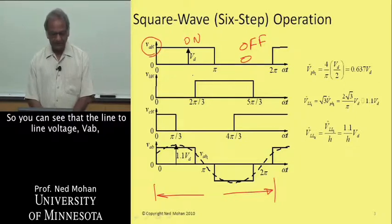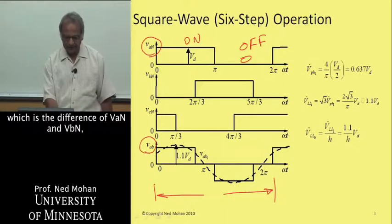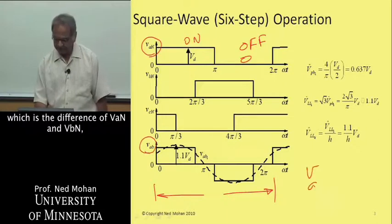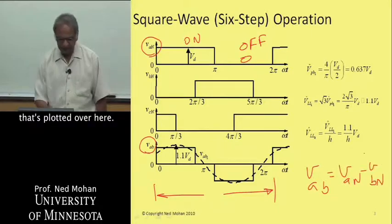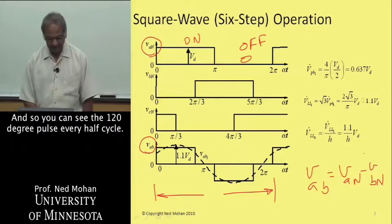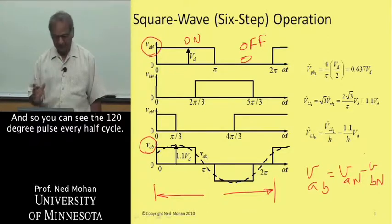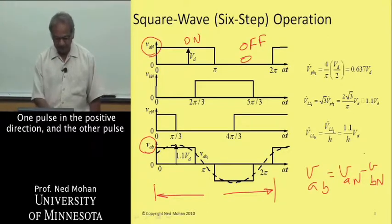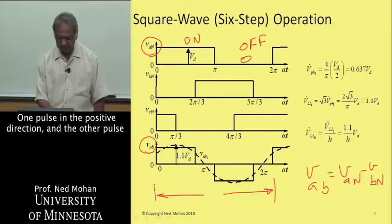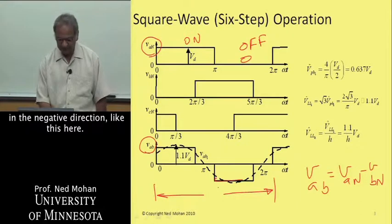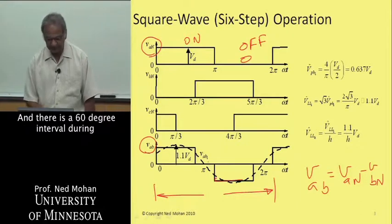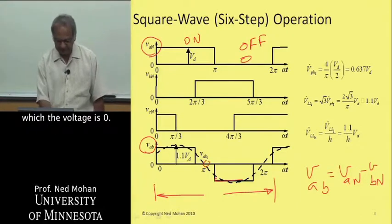You can see that the line-to-line voltage VAB, which is the difference of VAN and VBN, is plotted over here. You can see that it's a 120-degree pulse every half cycle, one pulse in the positive direction and the other one in the negative direction. And there's a 60-degree interval during which the voltage is zero.